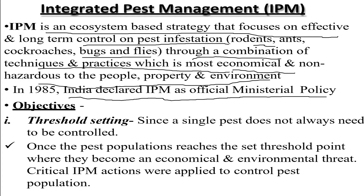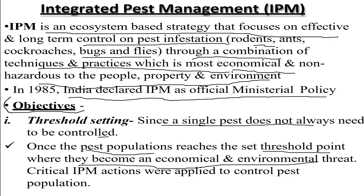Talking about some of the objectives of IPM — the first is threshold setting. Since a single pest does not always need to be controlled, once the pest population reaches the set threshold point where they become an economic or environmental threat, critical IPM actions will apply to control pest populations. A limit has been set above which IPM gets activated to control the pest population.